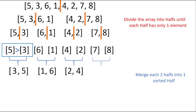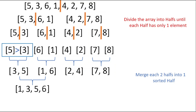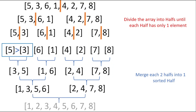We do the same for the next two halves and merge them into one sorted half, then do the same for the rest. After we finish, we start over by taking the first two halves and merging them — adding the minimum element first. In this case we add one first, then three, five, and six.